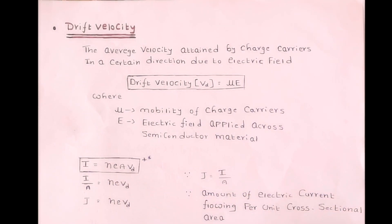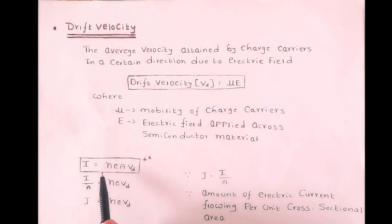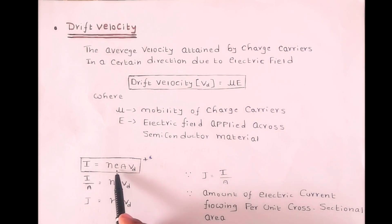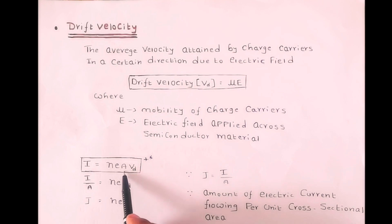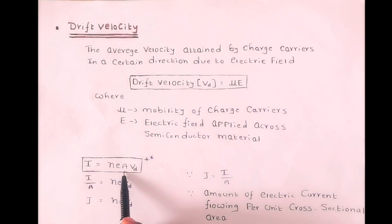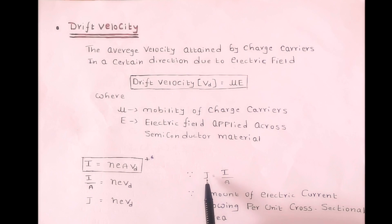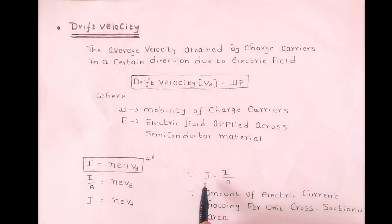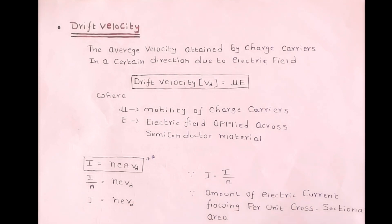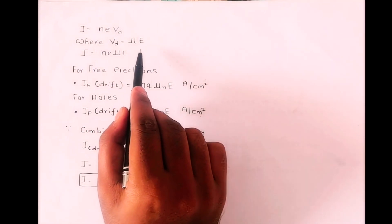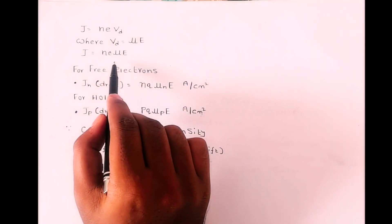Now let's see this relationship. Current I in a semiconductor is equal to NeAVd, where N is the density of charge carriers, e is the charge of electrons, A is the cross-sectional area of the material, and Vd is the drift velocity. If we divide I by A, we get current density J, which is the amount of electric current flowing per unit cross-sectional area, denoted by capital J. So J = NeVd. And since drift velocity Vd = μE, we can replace Vd with μE.